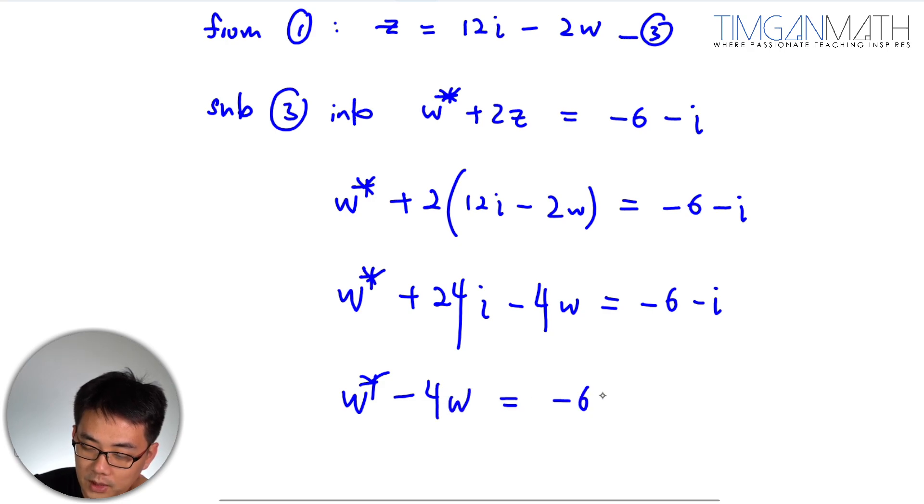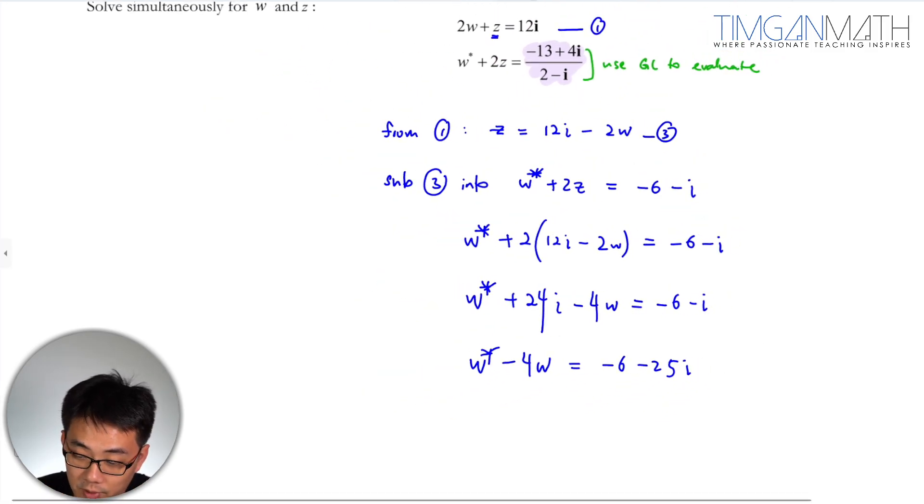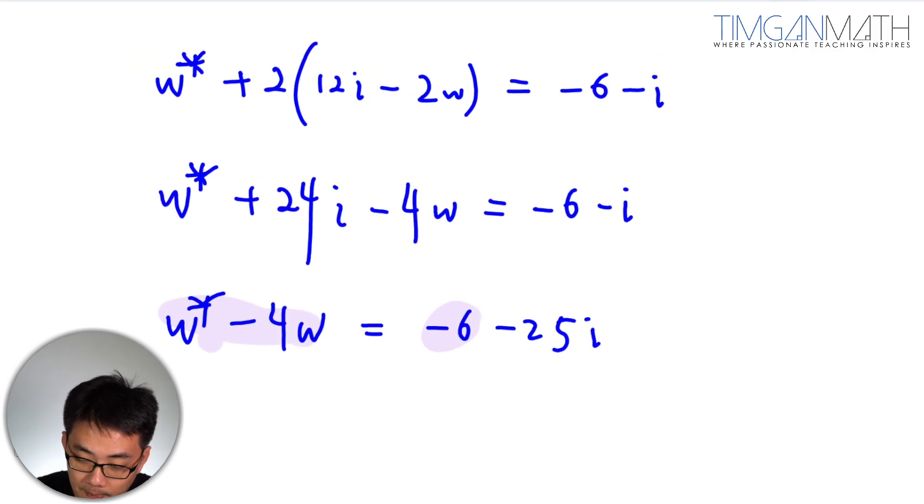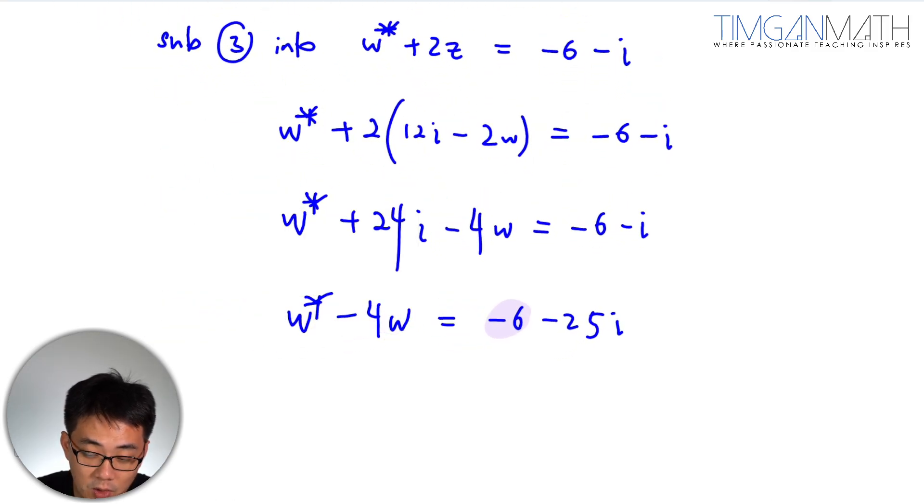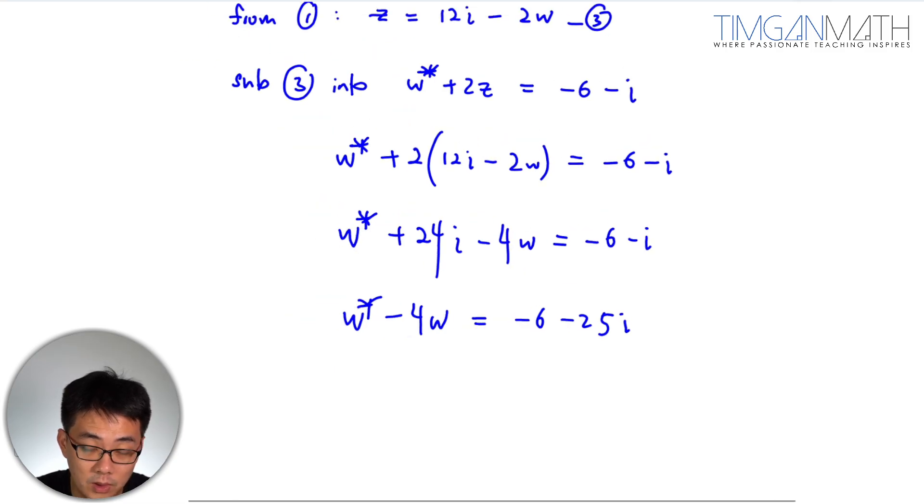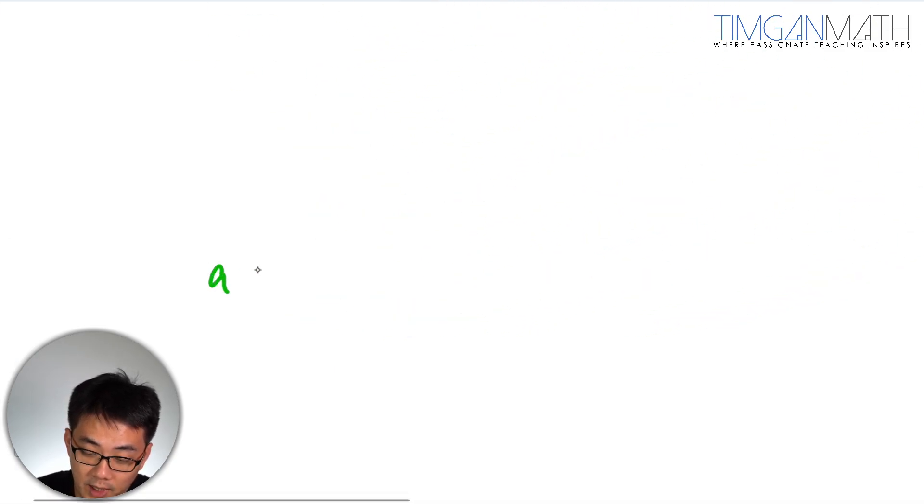Now, this is another important thing that I want you to understand. Please do not compare coefficients like that. Some students will say you can just compare the real and the real, the imaginary and imaginary. You can't do that. You can only compare the coefficients when the coefficients are all real numbers. For example, if a plus bi equals 2 minus 5i, because a and b are real, then you can compare.